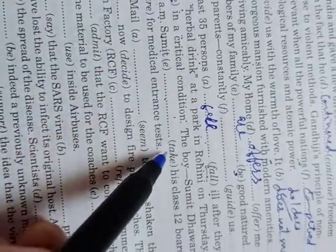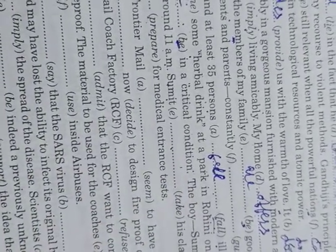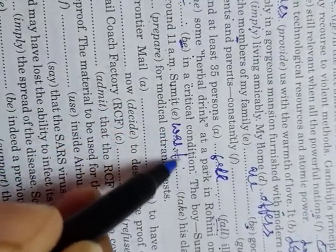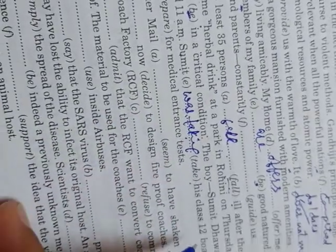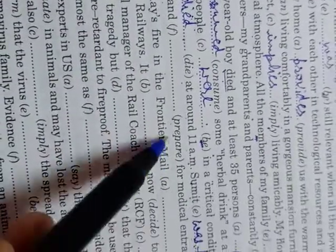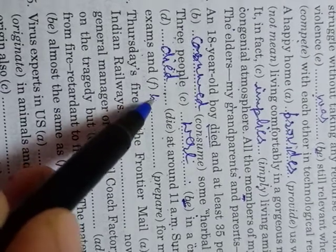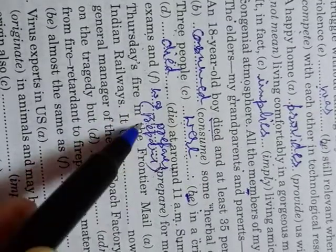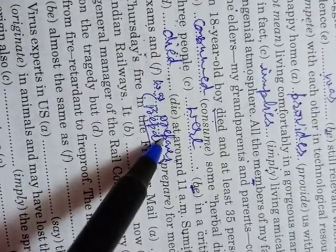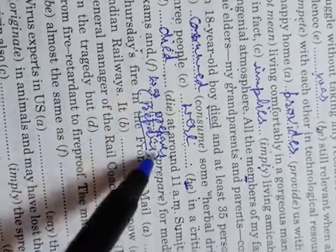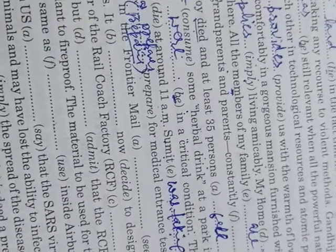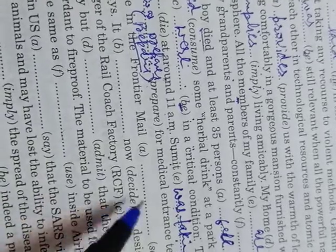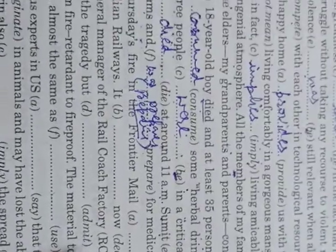Since Sumit is no more, we describe his ongoing activity before the incident in past continuous: 'Sumit was taking his class 12th board exam and was preparing for medical entrance tests.' The last two blanks are in past progressive or past continuous tense. So the key learning here: this is a news paragraph written in past tense, with the last two blanks in past continuous.